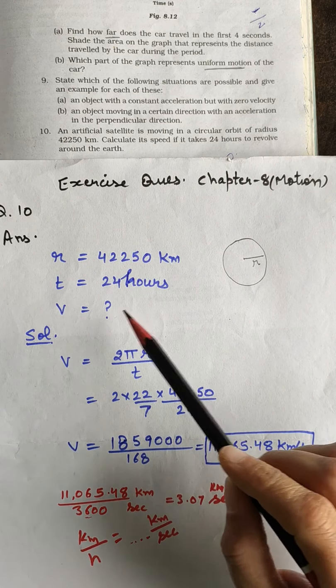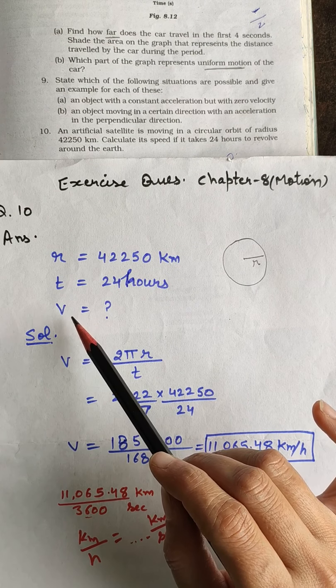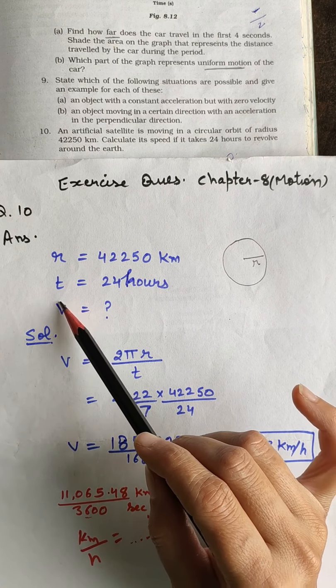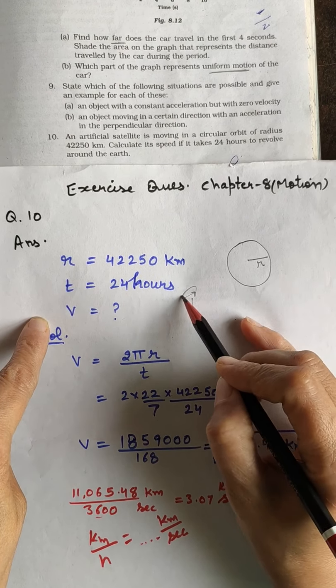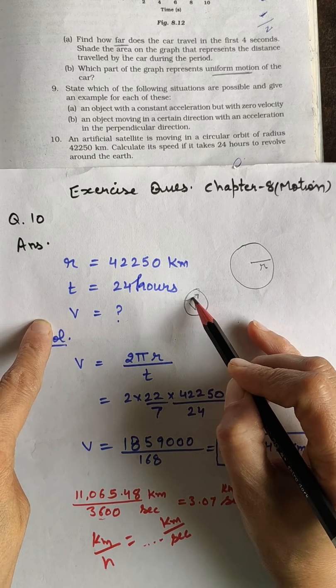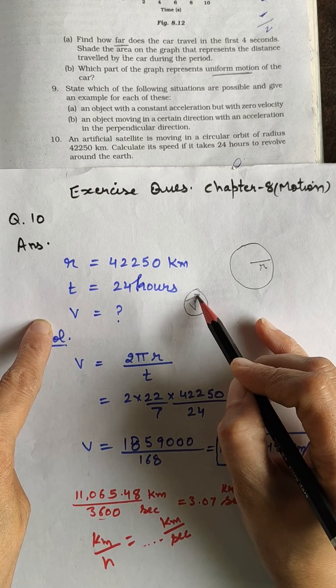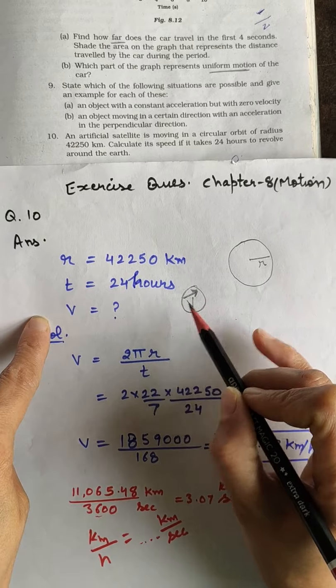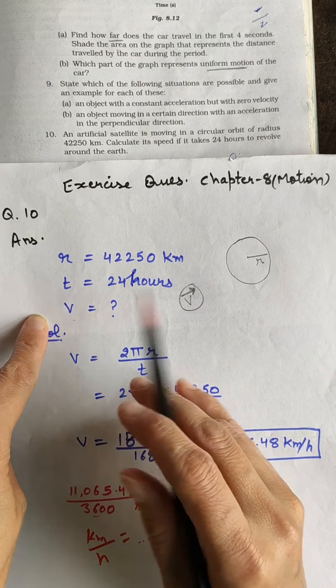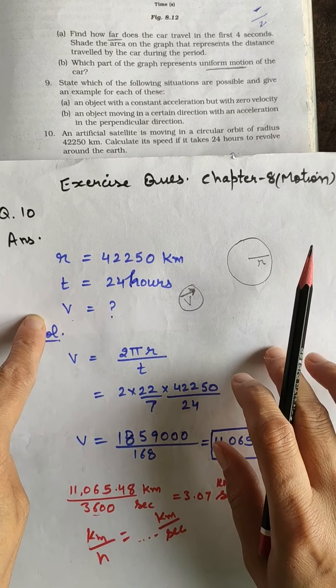Always remember, speed we represent by V but we are not putting an arrow. If we put an arrow that represents velocity. Velocity is a vector quantity so on vector quantity we put an arrow. If we are not putting arrow on this V, it means it is representing speed.